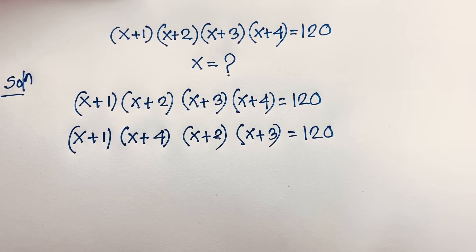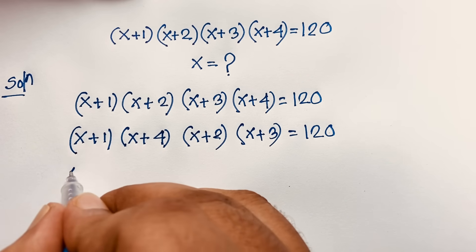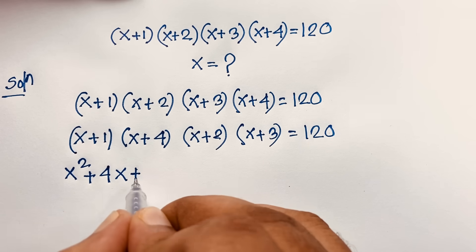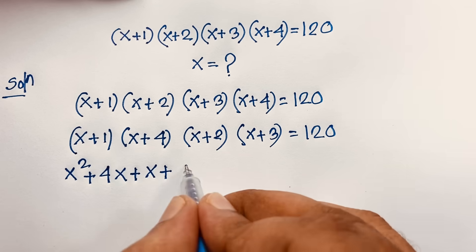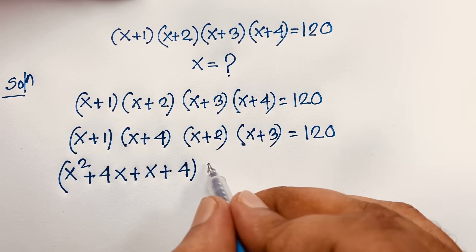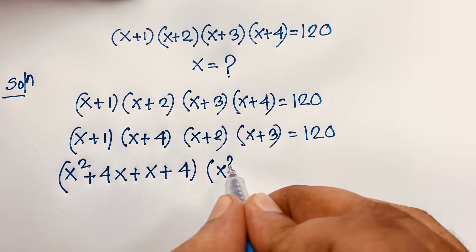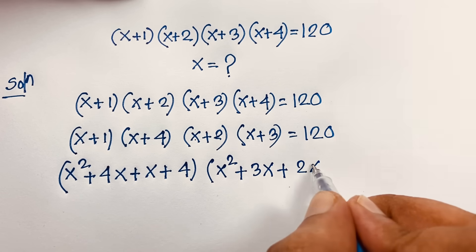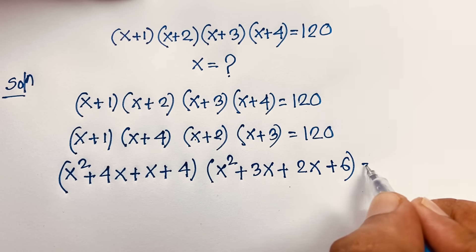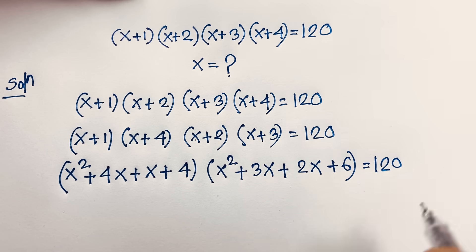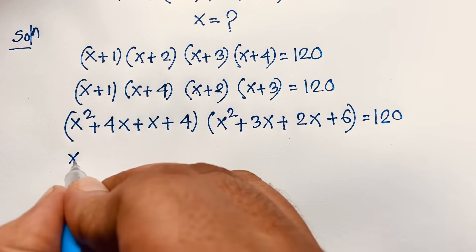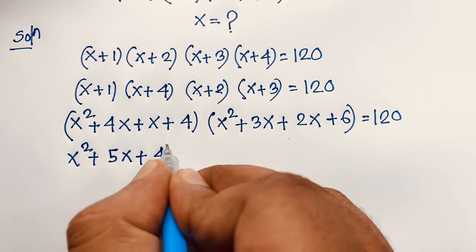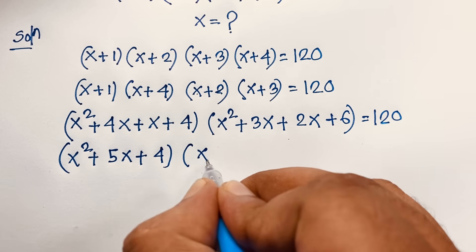Expanding (x+1)(x+4): x·x = x², x·4 = 4x, 1·x = x, and 1·4 = 4, giving x² + 5x + 4. Expanding (x+2)(x+3): x² + 3x + 2x + 6 = x² + 5x + 6. So we have (x² + 5x + 4)(x² + 5x + 6) = 120.